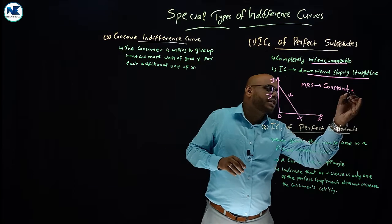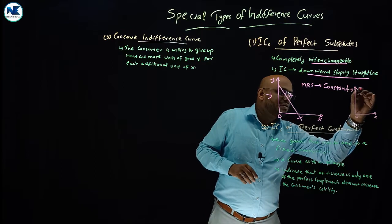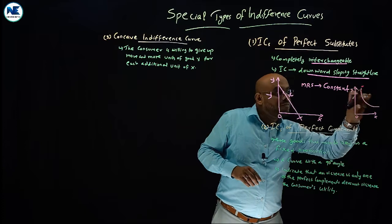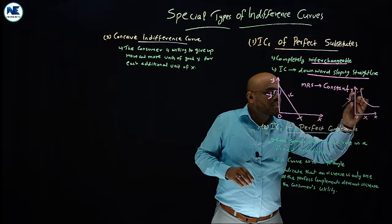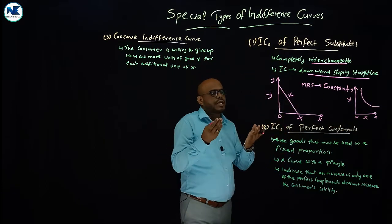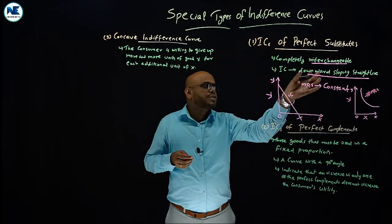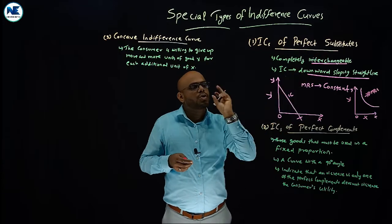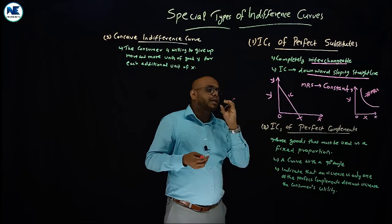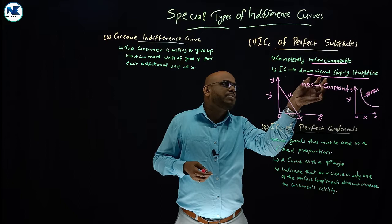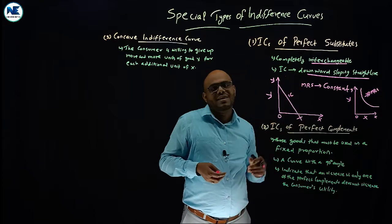Now, I am going to show the usual shape on the right — the indifference curve in its usual shape, which is convex to the origin. For substitutes to some extent, we can see a diminishing Marginal Rate of Substitution. But in the case of perfect substitutes — those goods that are completely interchangeable, like tea or coffee — the indifference curve is a downward sloping straight line.